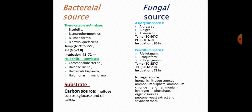Bacterial sources of thermostable alpha-amylase include Bacillus subtilis, Bacillus stearothermophilus, Bacillus licheniformis, and Bacillus amyloliquefaciens. The growth temperature is 45 to 55 degrees Celsius, pH 6 to 7, and incubation period 48 to 72 hours. Halophilic amylases come from Chromohalobacter species, Halobacillus species, Haloarcula hispanica, and Halomonas meridiana.